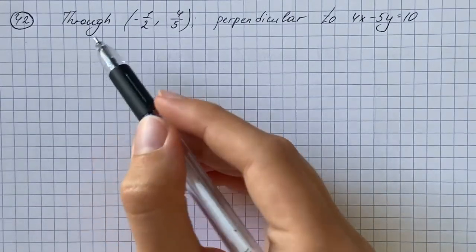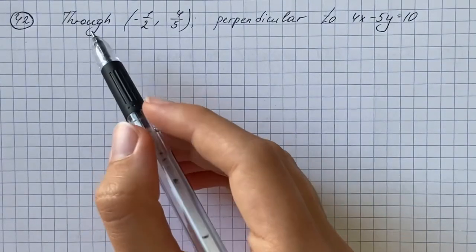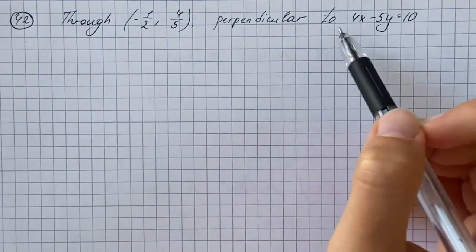So number 42 says that we should find the equation for the line which goes through a point and perpendicular to another line.